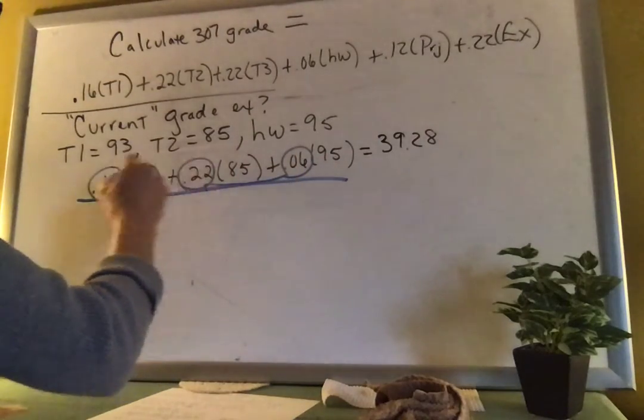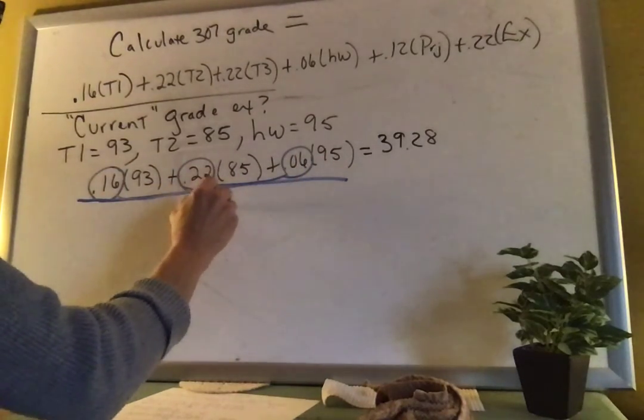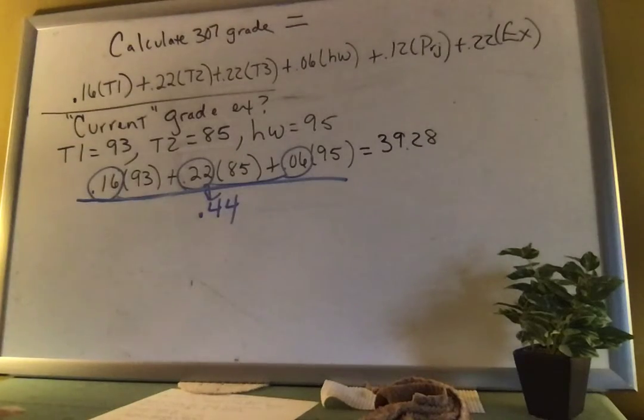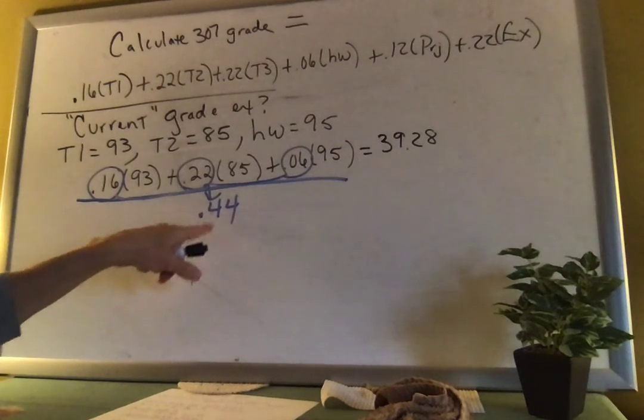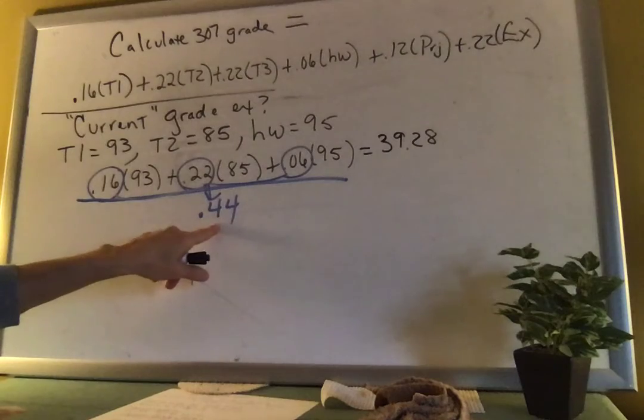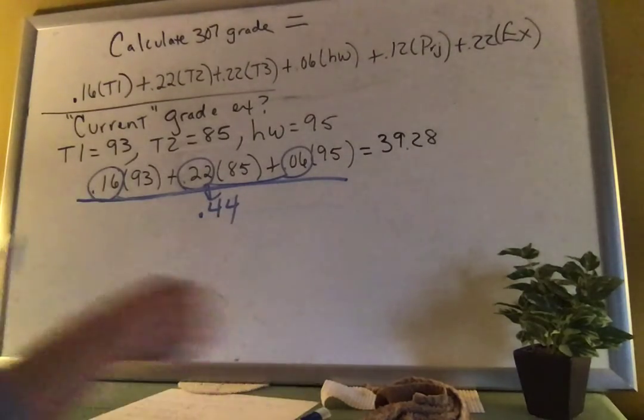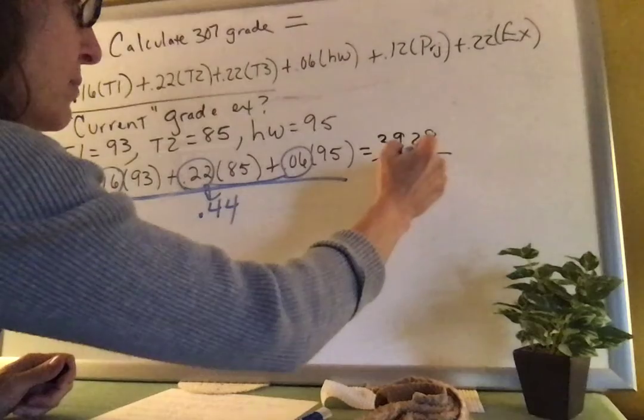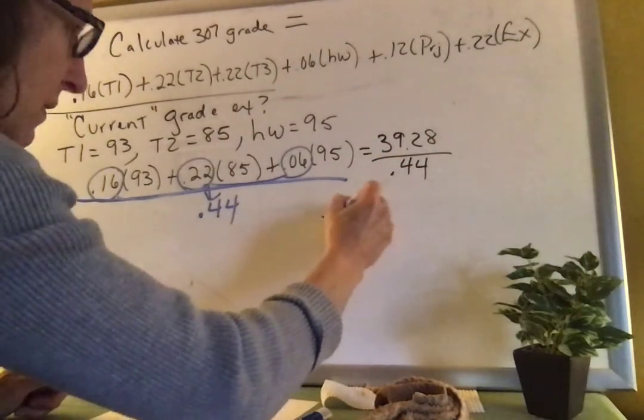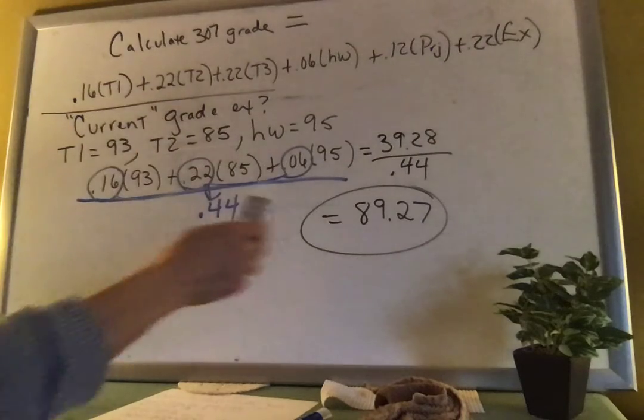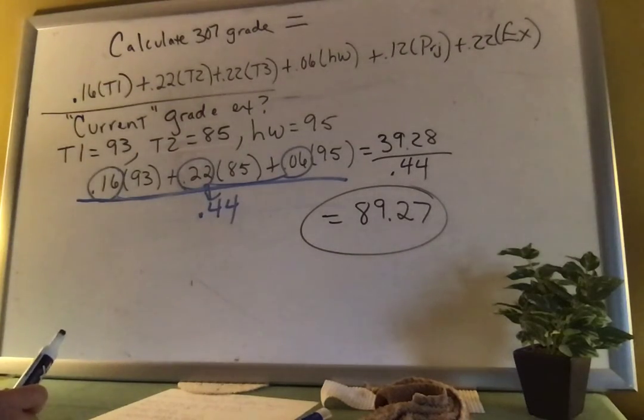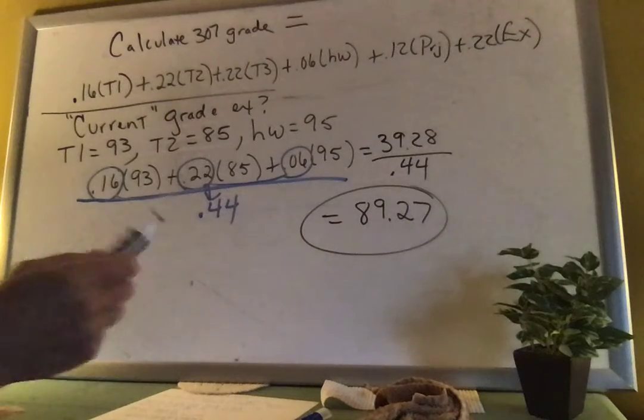So I guess you've done 44% of the course. So remember how we used to add up those weights, double check our work? Yes. You have to divide by the total weight. We haven't finished the semester. It's not one or a hundred percent, right? You've only completed 44% of the course. So divide by 0.44 and yeah, given those grades, having an 89.3 in the class seems to make reasonable sense.